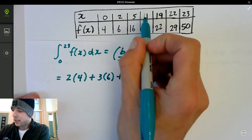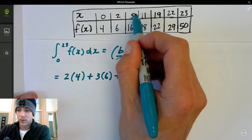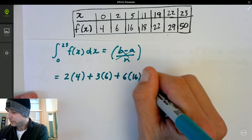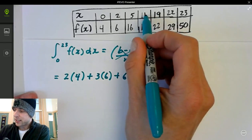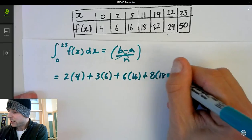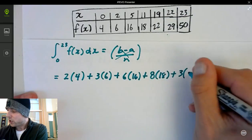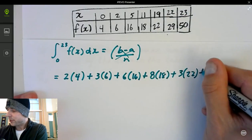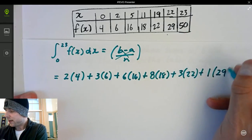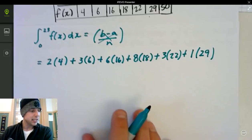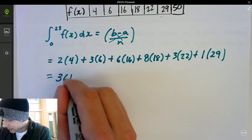Plus 11 minus five, which is six, times the height. So it's over, down, which is 16, plus 19 minus 11, which is eight. So 19 minus 11, you go down, which is 18, plus 22 minus 19, which is three, times 22. And lastly, plus 23 minus 22, which is one, times 29. And notice how the last number, like I said at the beginning, gets left out. Well, when you multiply all those together, I get a total of 361.